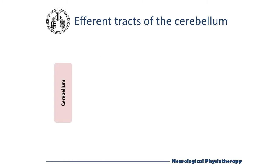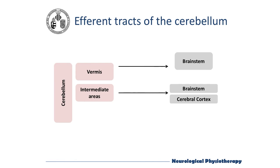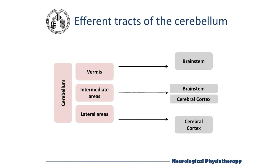As for the efferent tracts, there are mainly three, which start in the deep cerebellar nuclei: dentate, interposed and fastigial. The first tract leaves the vermis through the fastigial nucleus and reaches the bulbar and pontine regions of the brainstem, modulating balance. The second leaves the intermediate zones through the interposed nuclei, passes through the thalamus and reaches the cerebellar cortex and brainstem, helping to control reciprocal contractions of agonist and antagonist muscles in peripheral regions of the limbs, mainly hands, fingers and thumbs. Finally, tracts leaving the lateral zones through the dentate nuclei also cross the thalamus and reach the cerebral cortex, regulating coordination of successive motor activities.